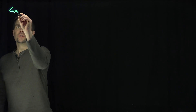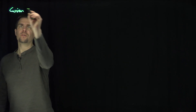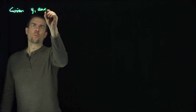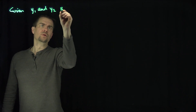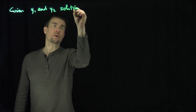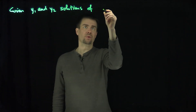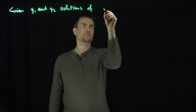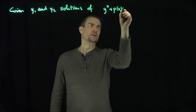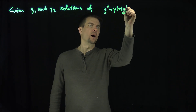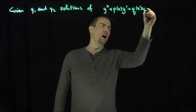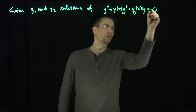Let's be given two solutions, y1 and y2, solutions of this homogeneous problem: y double prime plus p of x times y prime plus q of x times y equals zero.